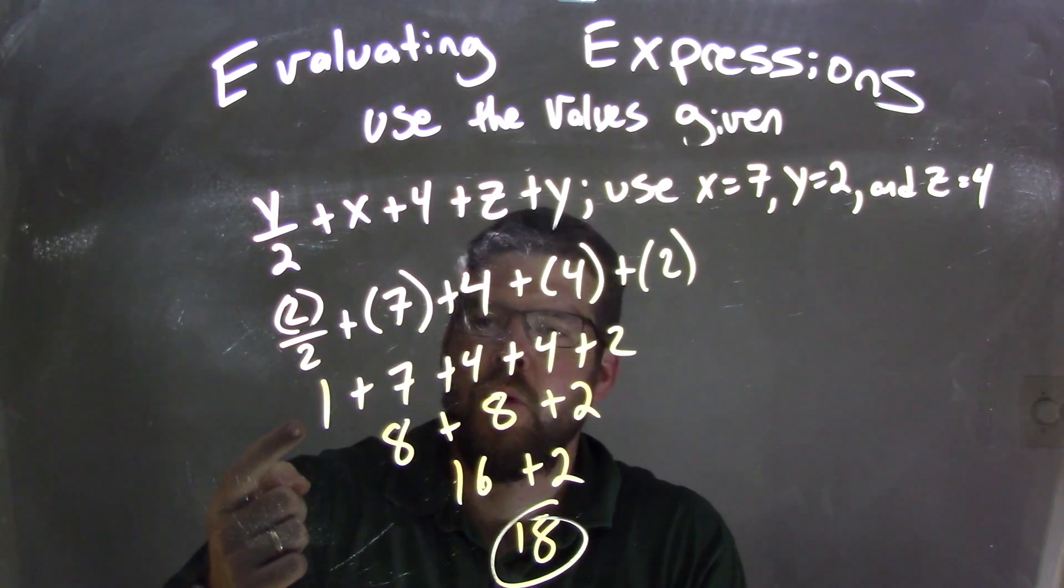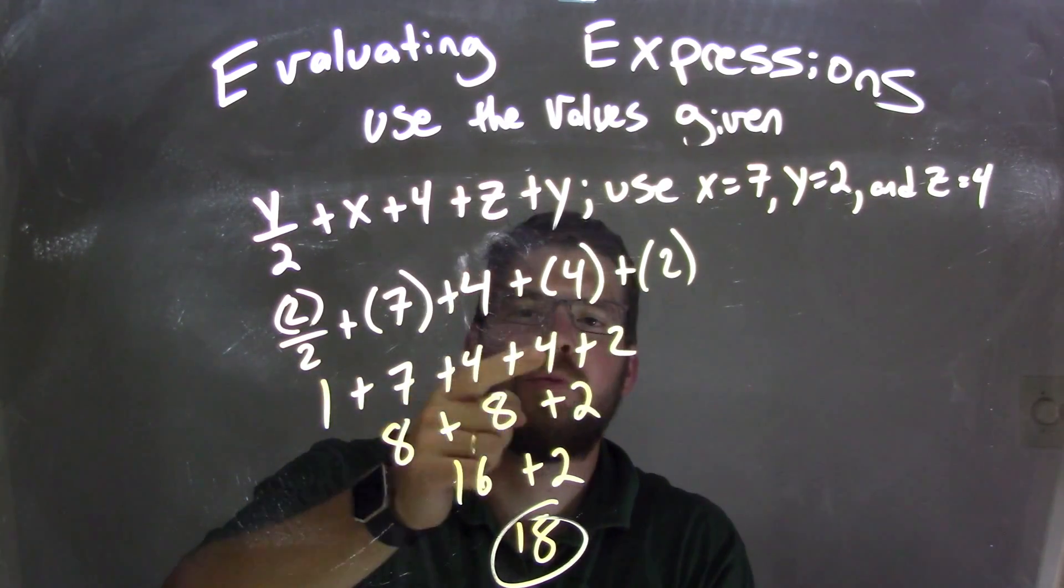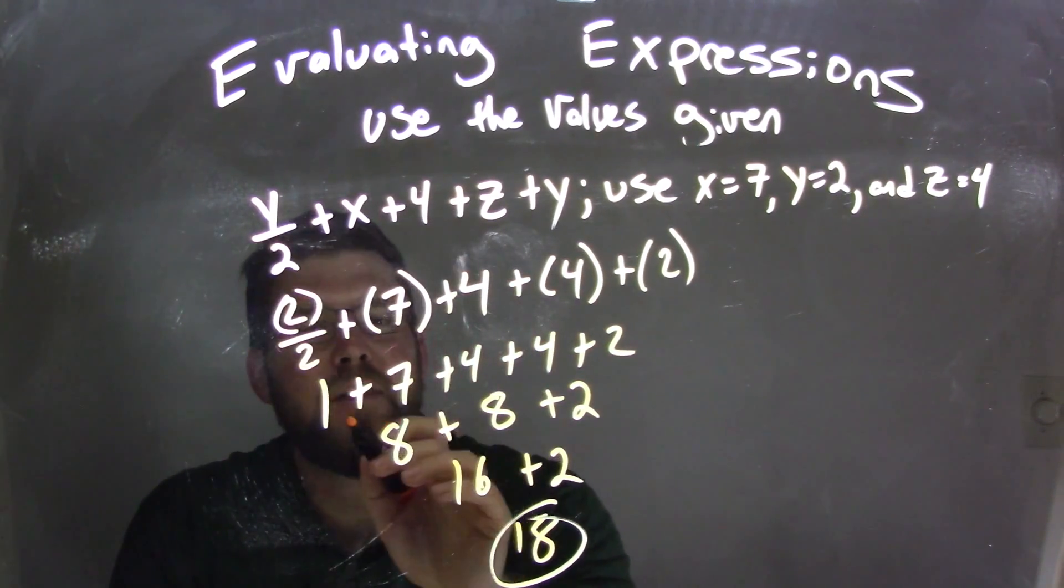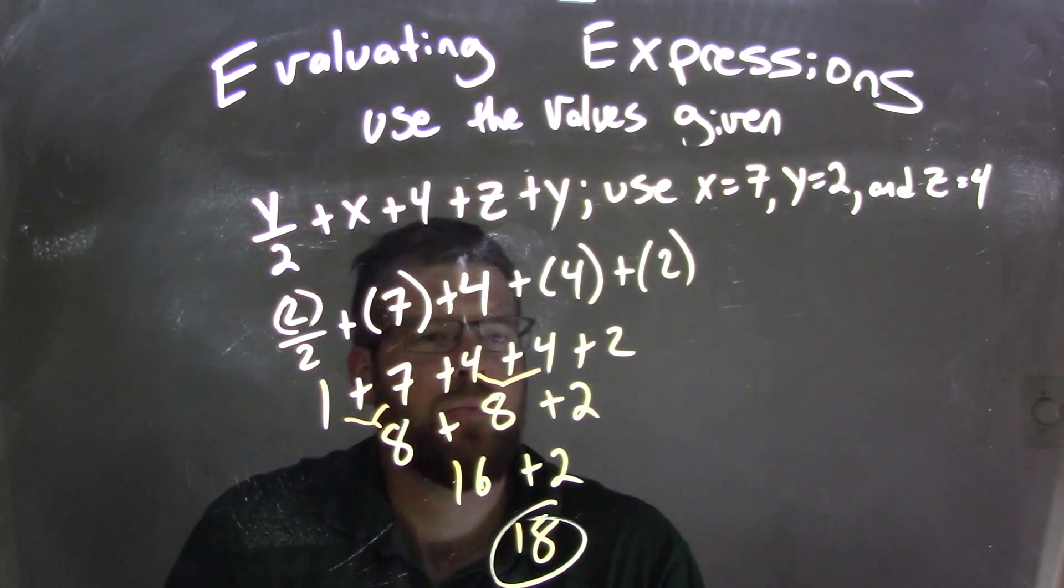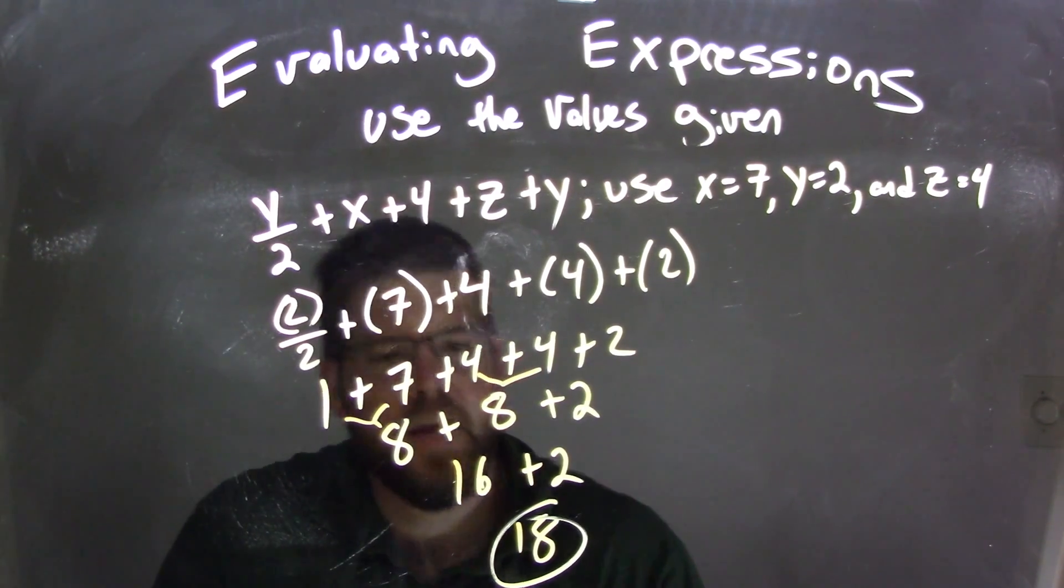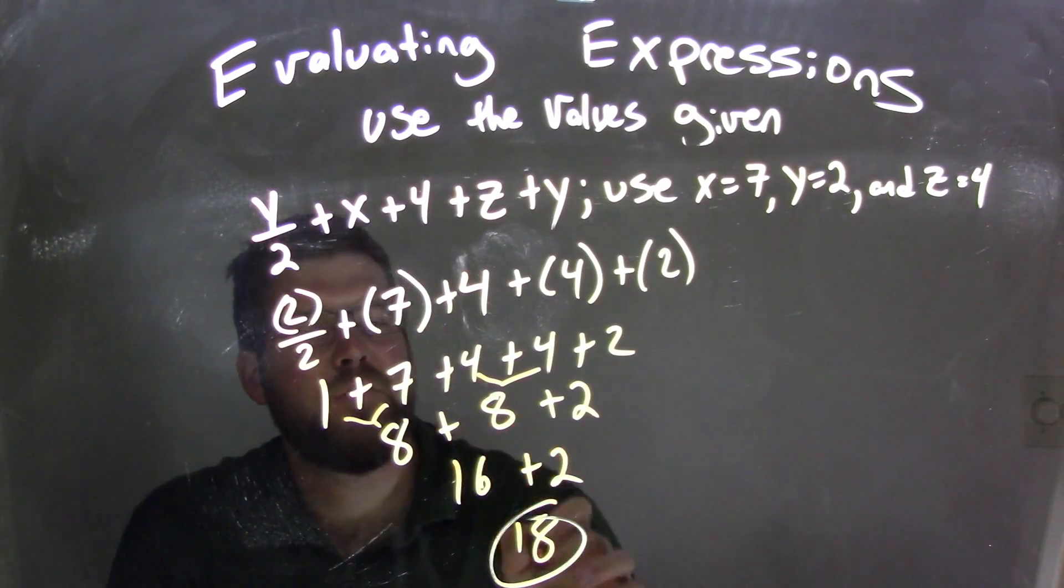2 divided by 2 was first, which is 1, and then we have 1 plus 7 plus 4 plus 4 plus 2. 1 plus 7 came out to be 8, and 4 plus 4 became the other 8, plus 2. So 8 plus 8 gave us 16, and 16 plus 2 is 18.